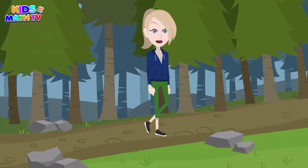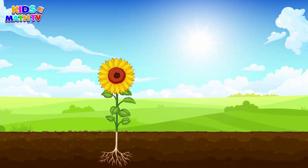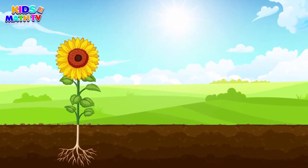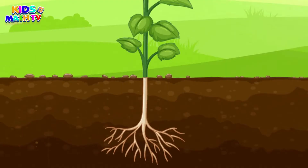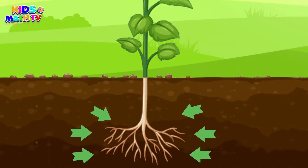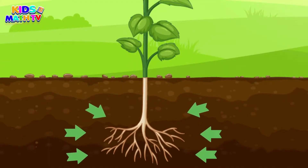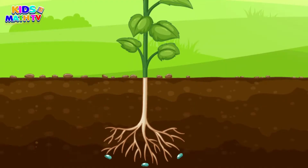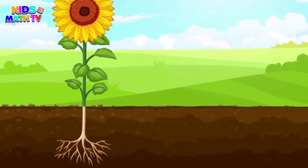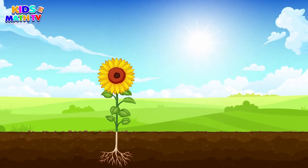First, we have the roots. Roots are like the plant's feet — they keep the plant anchored in the ground and help it absorb water and nutrients from the soil. Roots are usually hidden underground, but you can sometimes see them poking out of the soil.